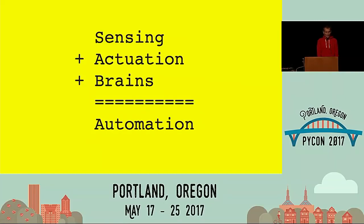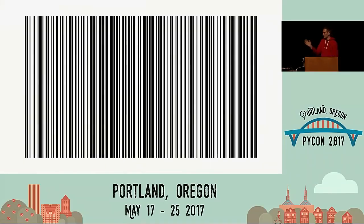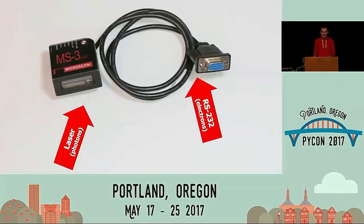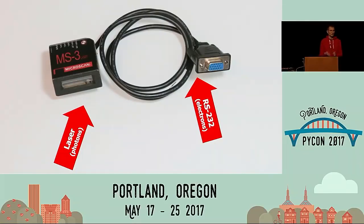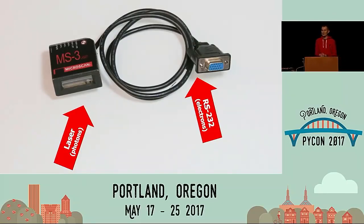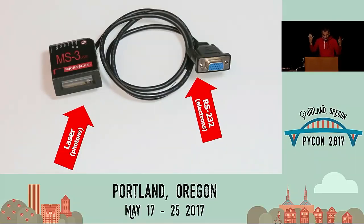Everyone's waiting for the first line of Python on the screen, so let's dive right in. This is a barcode. This is a barcode scanner — the one I brought today. On the left side, that's where the photons come shooting out — the laser reading the barcode. On the right side, that's where the electrons come out — the data we're interested in. It's using a protocol called RS-232. Some people might be too young to remember computers having serial ports. RS-232 specifies the type of cable, baud rate, data format. The good news is Python is old enough to remember the serial port, so there's a library to talk to it.